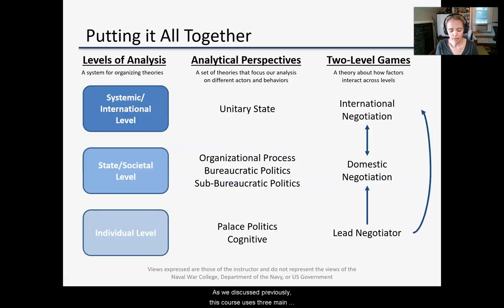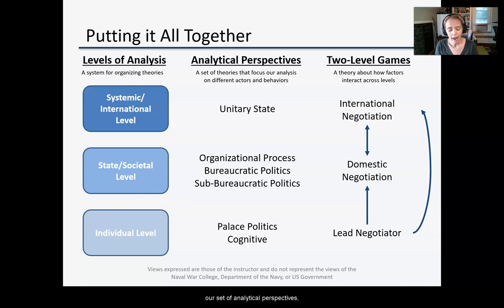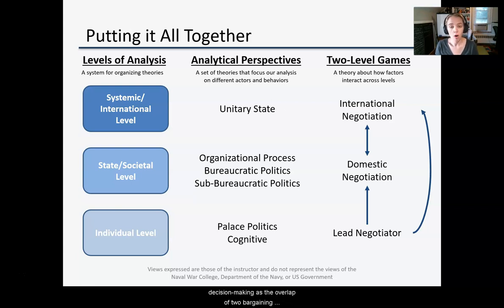As we discussed previously, this course uses three main theoretical constructs to analyze foreign policy decision-making: levels of analysis, our set of analytical perspectives, and two-level games. Today we're going to look at two-level games, which views foreign policy decision-making as the overlap of two bargaining games — one international and one domestic.